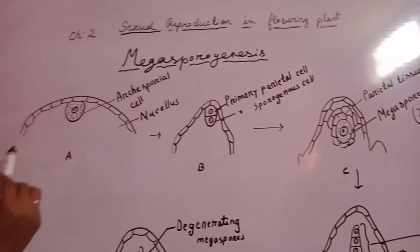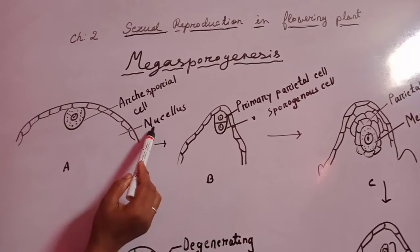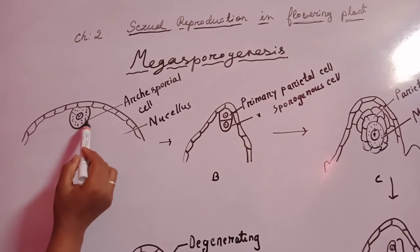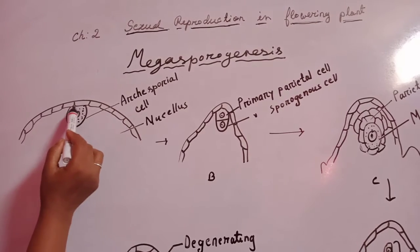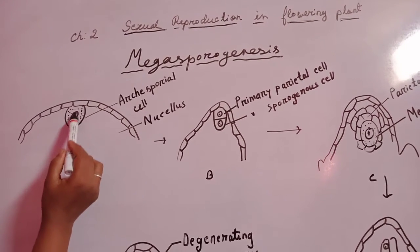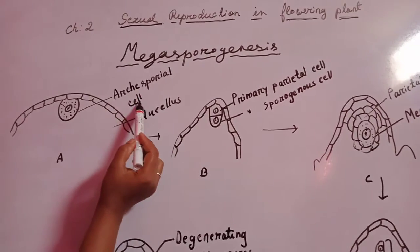At first, one hypodermal cell of the nucellus becomes differentiated by its large size, dense cytoplasm, and prominent nucleus. These cells are known as archosporial cells.